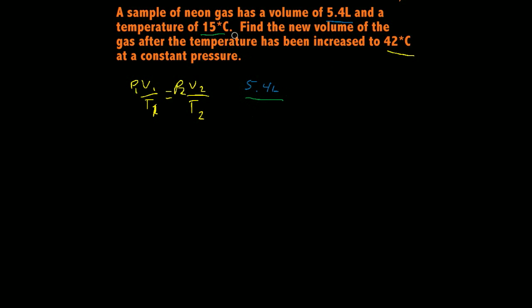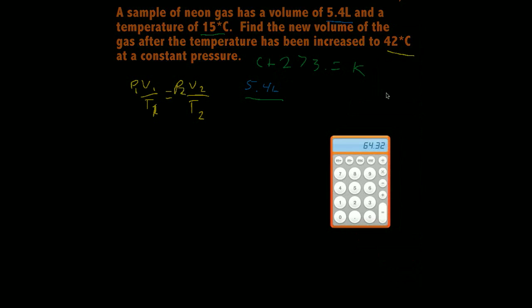So we need to change this 15 degrees Celsius into Kelvin. Kelvin is Celsius plus 273. It's technically 0.15, but you can just say 273 equals Kelvin. So we've got 15 degrees Celsius, add 273.